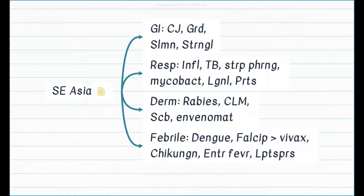For a traveler from Southeast Asia with dermatologic complaints, what are the top diagnoses not to miss? First, make sure the patient does not need rabies post-exposure prophylaxis. The second most common differential is cutaneous larva migrans. Other possible considerations include scabies and envenomation.